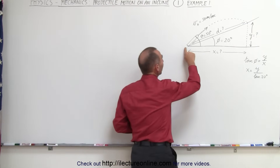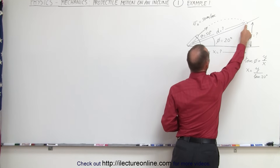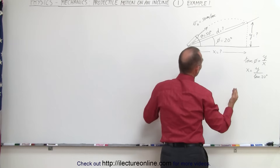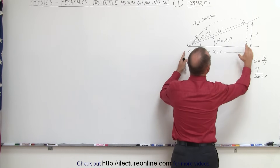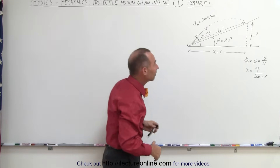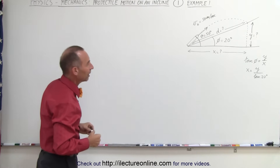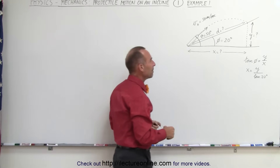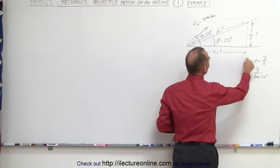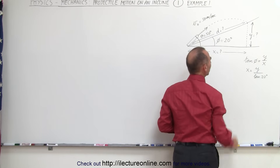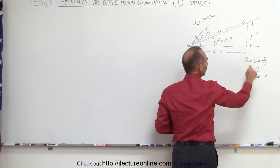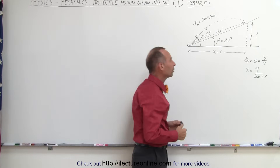The question is: how far along the incline will the projectile go when it lands? In other words, we need to find the x distance and the y distance. Using the Pythagorean theorem we can find the distance along the incline, keeping in mind that the relationship between x and y can be found through the tangent of the angle phi — in this case 20 degrees. Therefore x equals y divided by the tangent of 20 degrees.